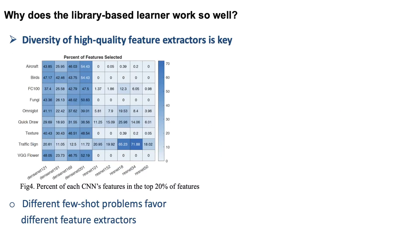We were wondering: why does the library-based learner work so well? We found the first reason is that the diversity of high-quality feature extractors is the key for few-shot learning. Even many trained on the same dataset, like ImageNet-1K, is actually a good option.